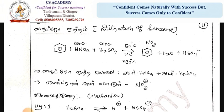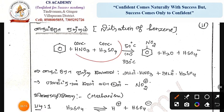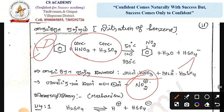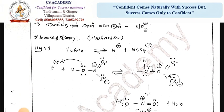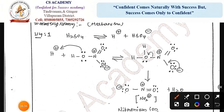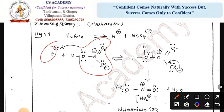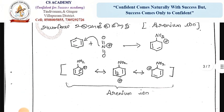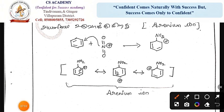Let's take a look at nitration of benzene — nitro atom, nitration of kalavi. Concentrated nitric acid and concentrated sulfuric acid are used. Let's examine the electrons involved in this reaction.